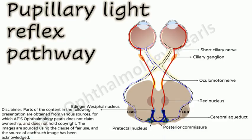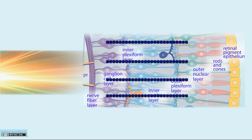Welcome to Epizo Ophthalmology Pearls. Today we shall discuss the pupillary light reflex pathway. When light strikes the eye, the rods and cones undergo phototransduction and the signal is processed by bipolar cells that synapse on the retinal ganglion cells. Those involved in the pupillary light reflex are almost exclusively the intrinsically photosensitive retinal ganglion cells, which contain melanopsin as a photopigment. In addition to receiving input from the rods and cones, they also undergo phototransduction upon being exposed to light even without photoreceptor input.